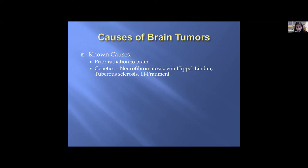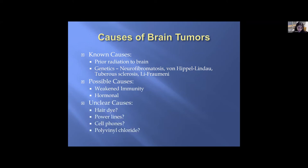Genetics can also play a role — neurofibromatosis, von Hippel-Lindau, tuberous sclerosis, and Li-Fraumeni are some syndromes to name a few. There are possible causes associated with weakened immunity or hormonal effects. Unclear causes include hair dye, power lines, cell phones, and polyvinyl chloride. More studies are being done on some of these, such as cell phones, to reach a more definitive conclusion, and of course there are many unknown factors.